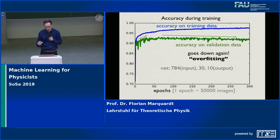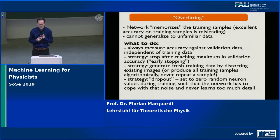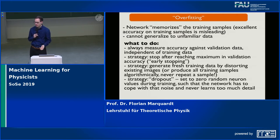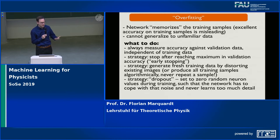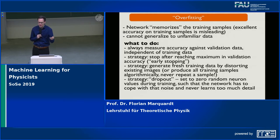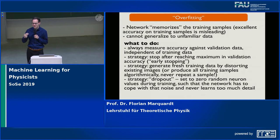What's going on is known as the phenomenon of overfitting. What really happens is that the network memorizes the training examples. You've shown these training examples again and again, so at some point the network knows: this picture where the pixels are arranged in exactly this order is a three, because it was told many times. But that doesn't mean it can generalize to other pictures of a three that look slightly different. It's like a student who just memorizes and cannot answer new questions.